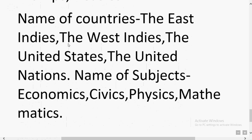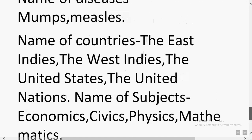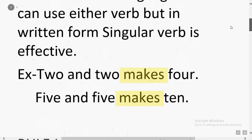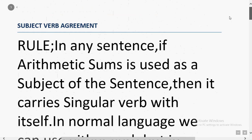Names of countries like the United States and the United Nations, and names of subjects like economics, civics, physics, and mathematics — these all end in 's' but take singular verbs. For example: 'Economics is my favorite subject,' 'Physics is my favorite subject.' 'Are' is not used with them. Even though these words carry 's' within them, the sentence is not considered plural.